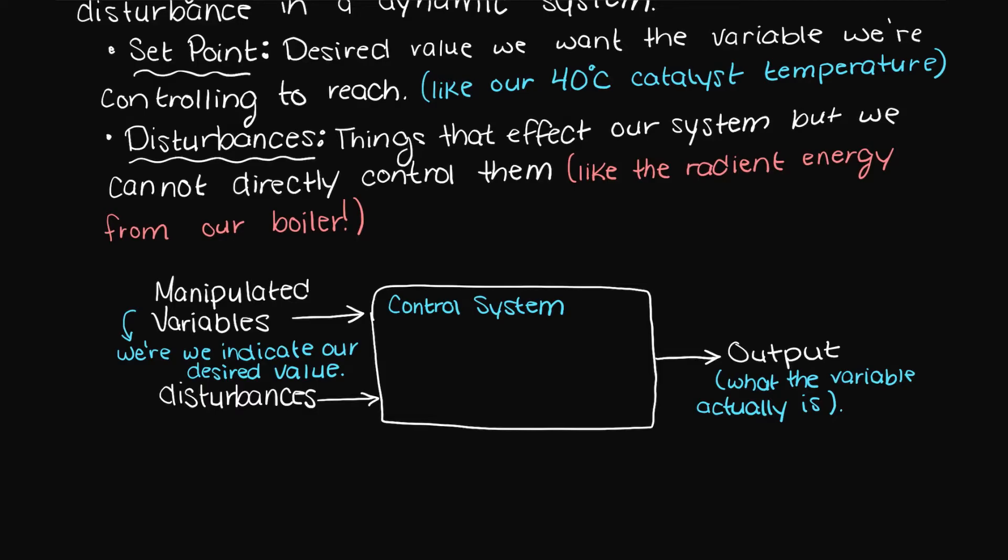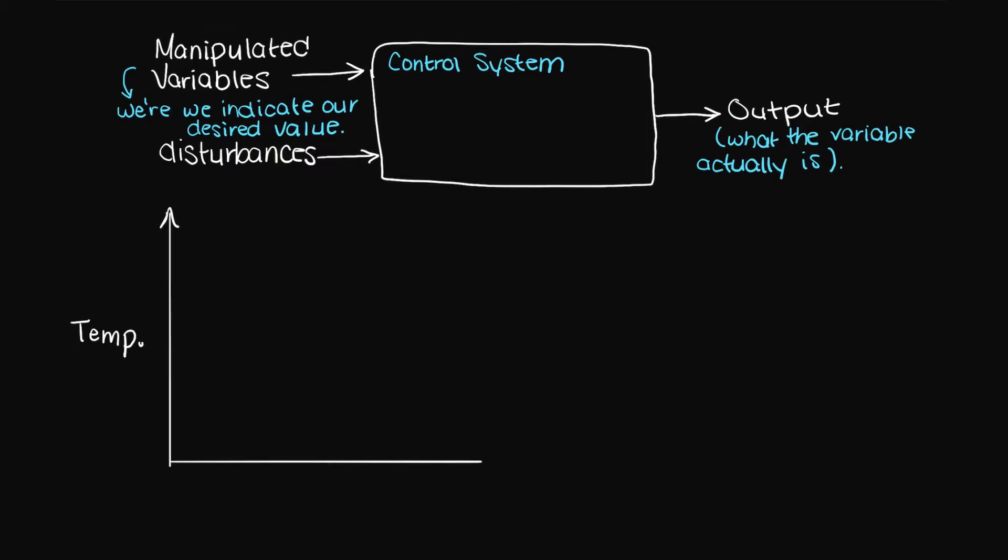Obviously control systems are more complex than this and we will work our way up to that in future videos. I just want you to recognize that a control system is about achieving a desired result despite disturbances. So before implementing our new control system, let's say the temperature profile looks something like this.